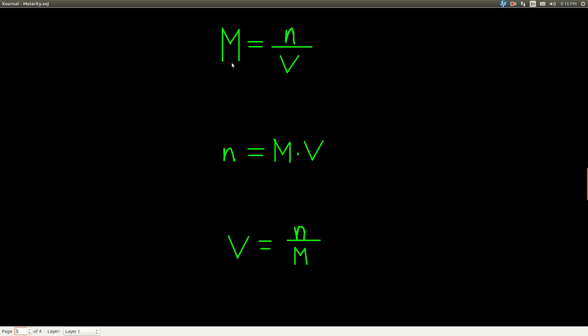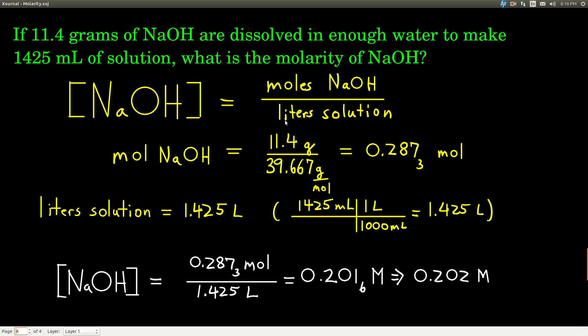If you want to find the molarity, you know the moles of the solute, or you can find them, and you know the liters of solution, just moles over liters. If you want to find the moles of the solute, you can just take the molarity, multiply it times the volume. Now here you make sure the volume's in liters. If you want to find what volume of solution you have in liters, you just take the moles divided by the molarity.